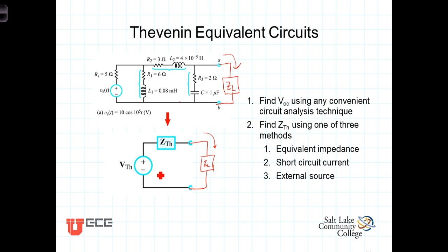The Thevenin impedance we can find in one of three different ways. We can determine the equivalent impedance seen looking back into the circuit with all independent sources deactivated for one method. Another method involves putting a short circuit, actually grounding or shorting out the AB terminals, calculating that short circuit current. And then this Thevenin impedance is equal to the ratio of the open circuit voltage to the short circuit current.